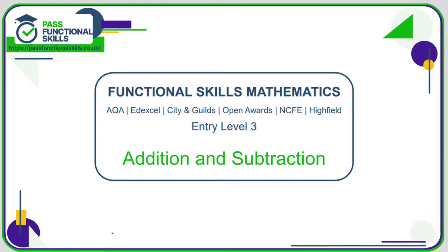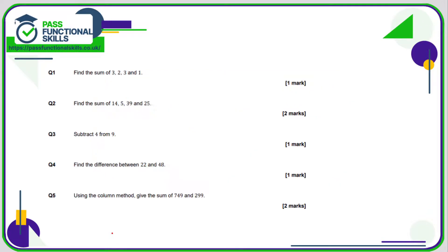Let's take a look at addition and subtraction. All of the questions in this section are non-calculator. Question number one says find the sum of 3, 2, 3, and 1. Find the sum of means add. Three plus two is five, plus another three is eight, plus one is nine. Find the sum of 14, 5, 39, and 25.